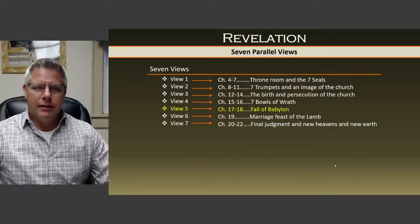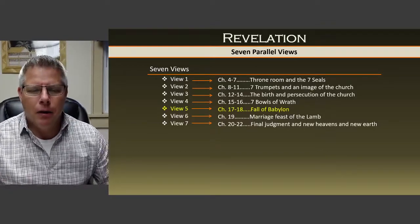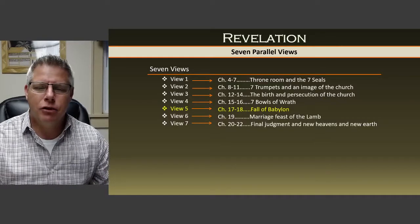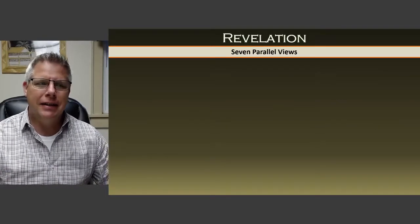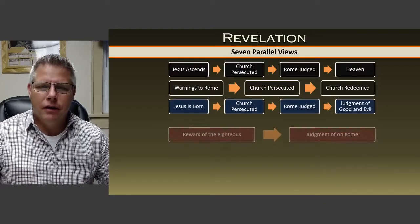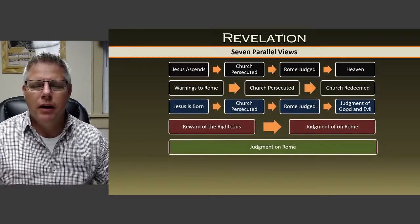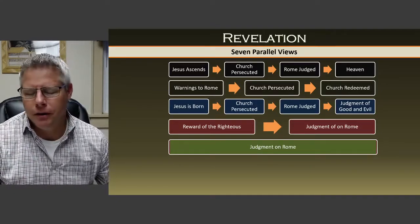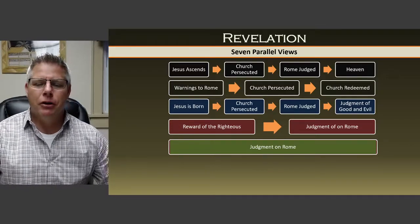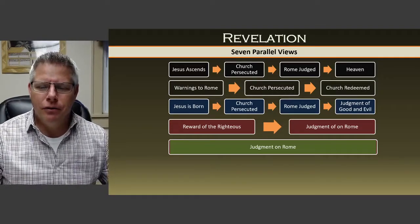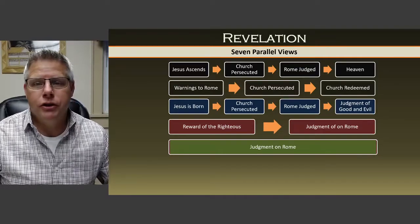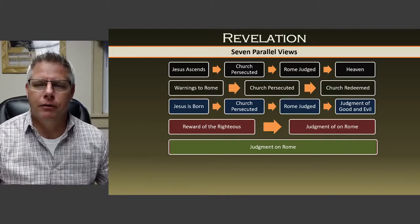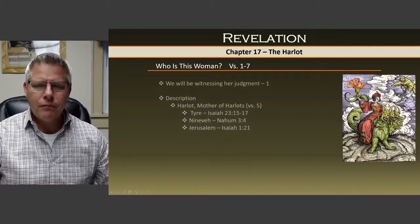We're looking at the book as seven parallel views. We're in the fifth view right now, which is the fall of Babylon — that's the main subject matter in chapters 17 and 18. When we kind of look at the views played out, our parallel view this time in chapters 17 and 18 is focused on the judgment of Rome, and that's where a lot of the end chapters of the book are going to be focusing.